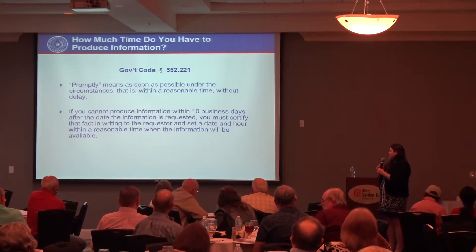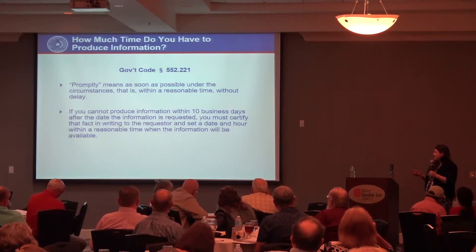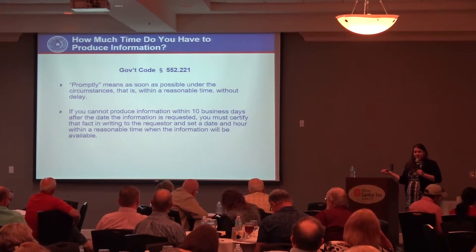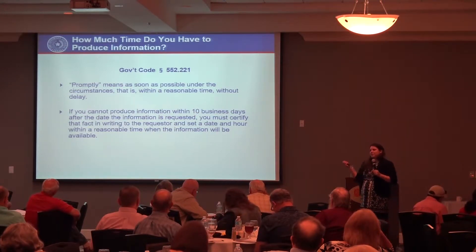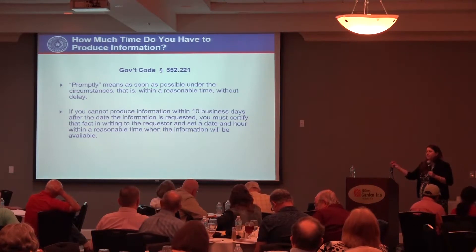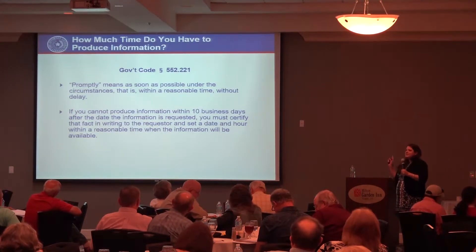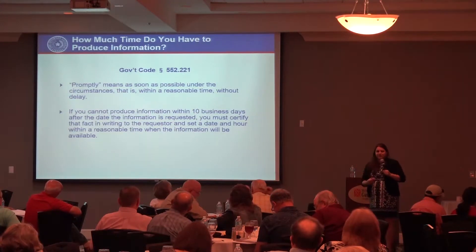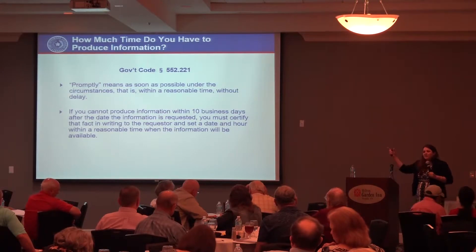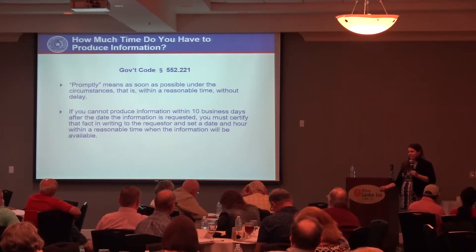If you cannot produce the information within 10 business days after receiving the request, you must certify that fact in writing and tell the requester a date and hour it will reasonably be available. This provision in section 552.221 only applies when you are releasing the information and doesn't change the deadlines for an Attorney General decision. Send a letter acknowledging receipt and providing the estimated availability date.